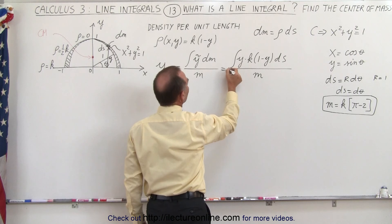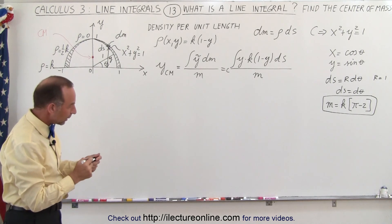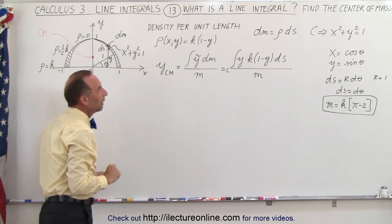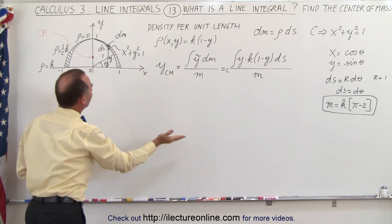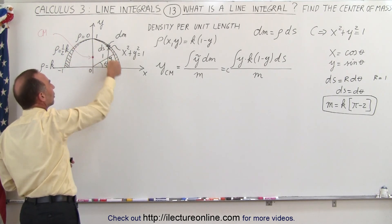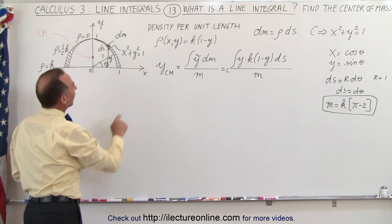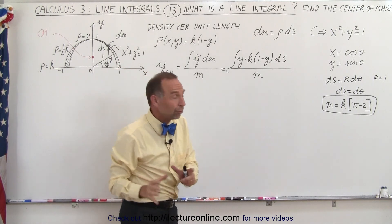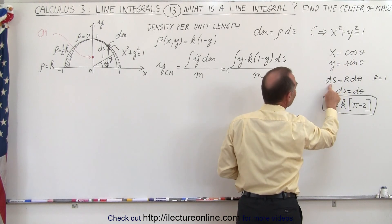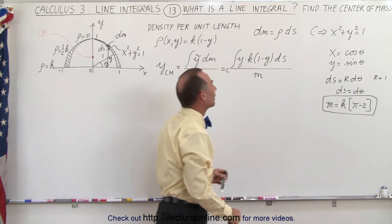This is now going to be integrated over the curve — that's why we call it the line integral. The curve is defined by the semicircle with equation x² + y² = 1. We convert that to parametric equations using the angle theta, which makes it a lot easier to integrate along the semicircle. We integrate from theta equals 0 to theta equals pi. x equals cosine of theta, y equals sine of theta, and ds equals the radius times dθ. Since the radius equals 1, ds simply equals dθ.